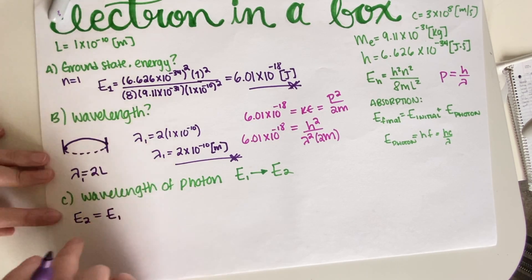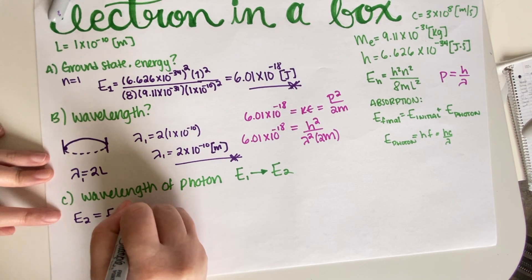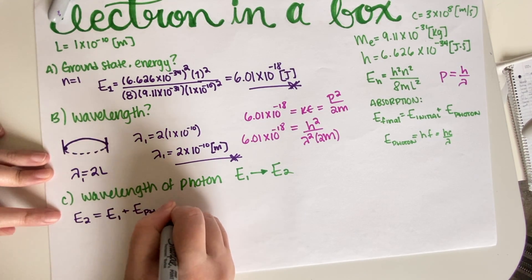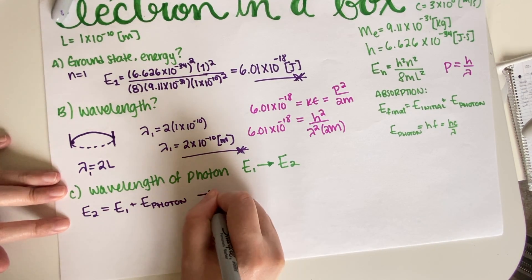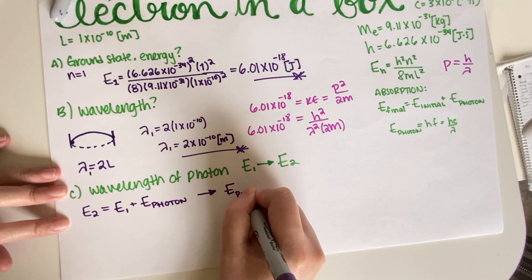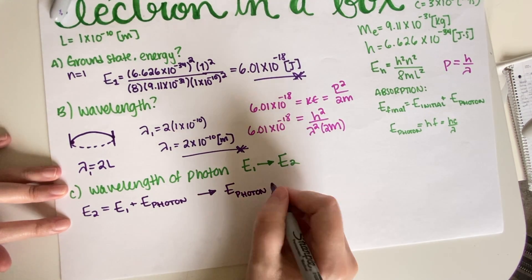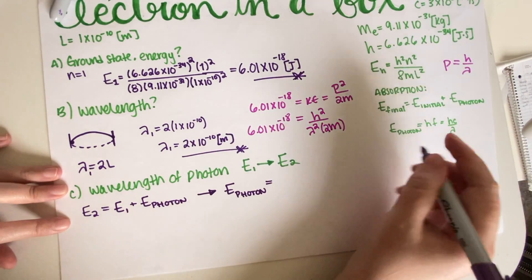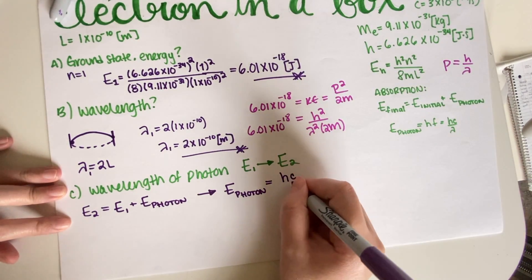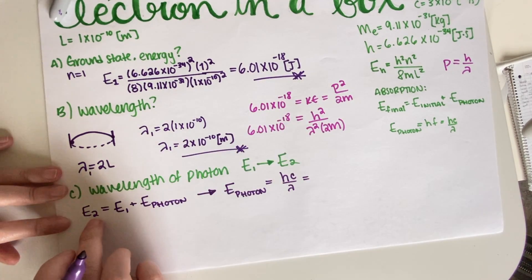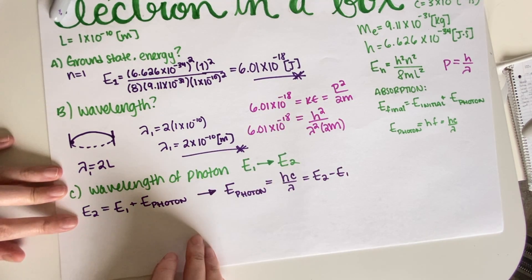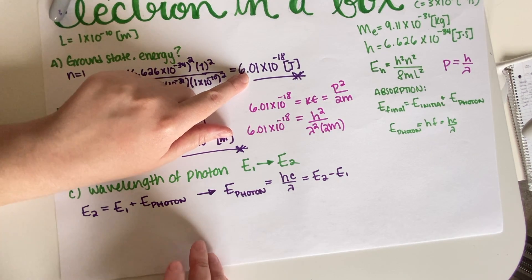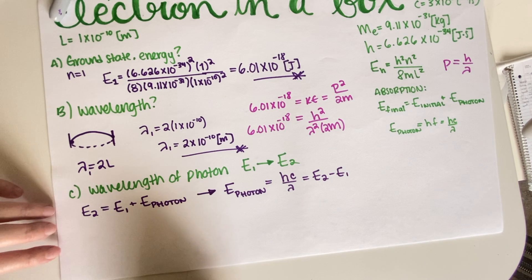So the energy of the photon equals E₂ minus E₁. We already have E₁, so now we need to calculate E₂ by applying the particle-in-a-box formula with n = 2.